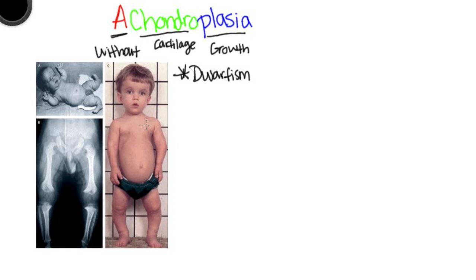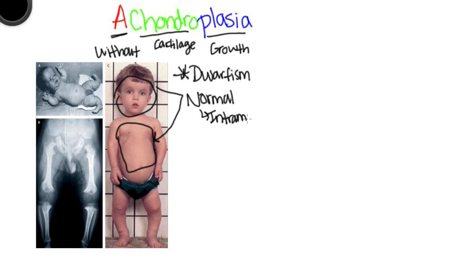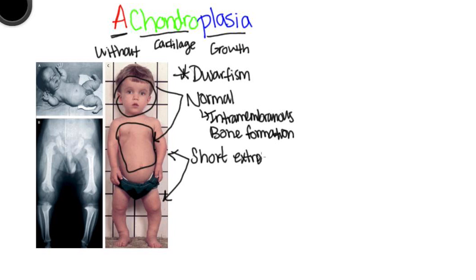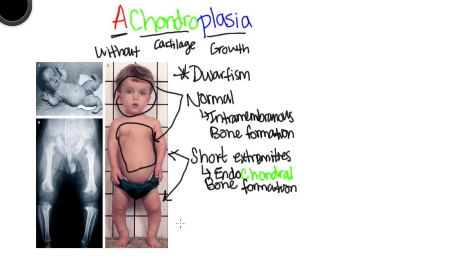This is a common cause of dwarfism, and as you may notice from this picture, these individuals have a normal head and a normal trunk. The reason this occurs is — if you recall from embryology, there are two types of bone formation. Intramembranous bone formation is not affected. However, you may notice in these individuals that their extremities are shorter and not developed properly. This is due to impaired endochondral cartilage bone formation.